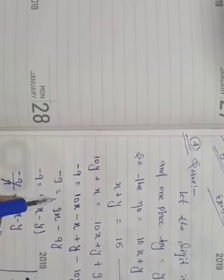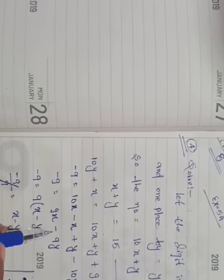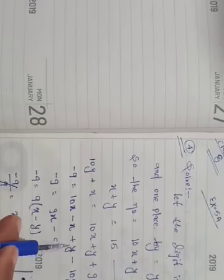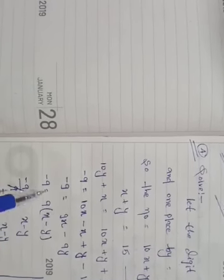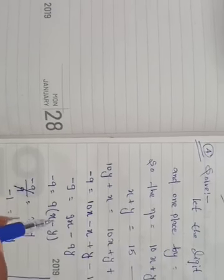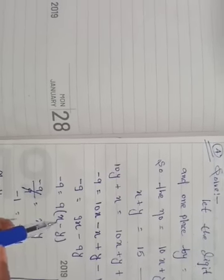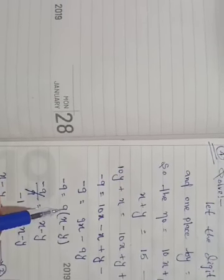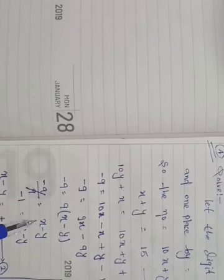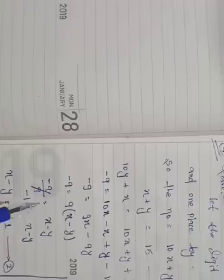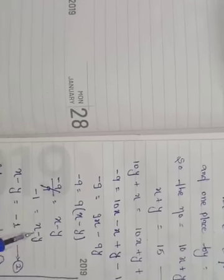Minus 9 equals 10x minus x plus y minus 10y. This simplifies to minus 9 equals 9x minus 9y. Factor out 9: 9 times (x minus y) equals minus 9. Divide both sides by 9: x minus y equals minus 1.